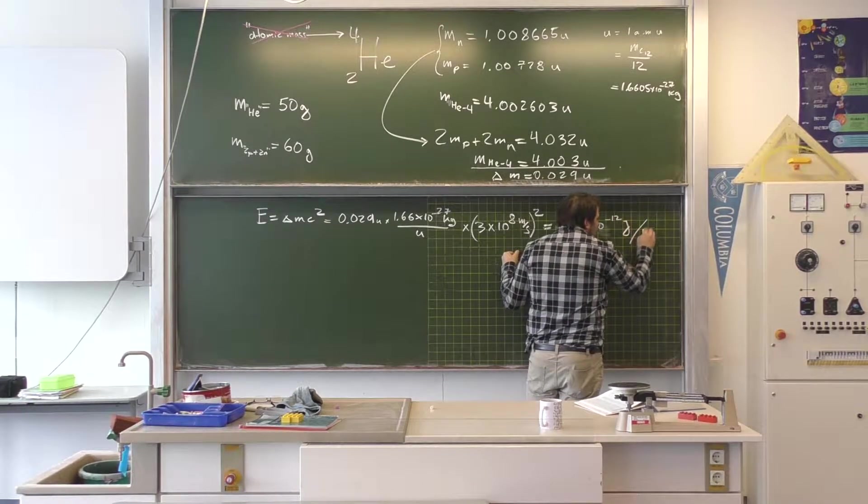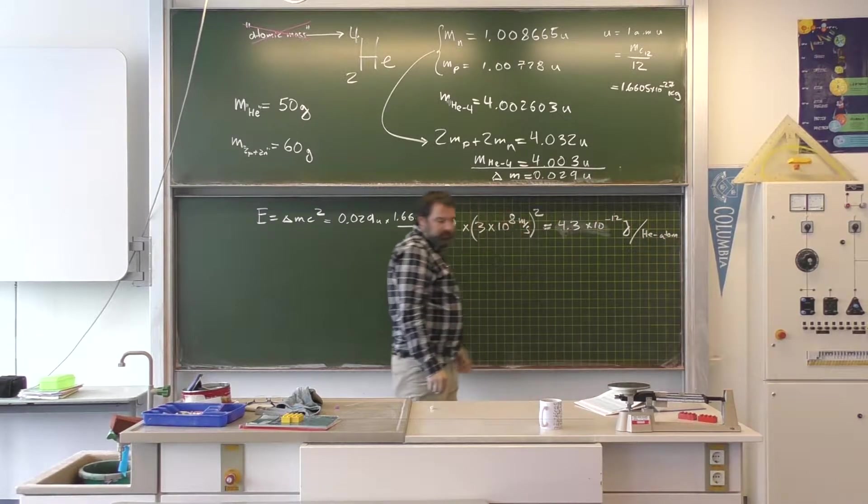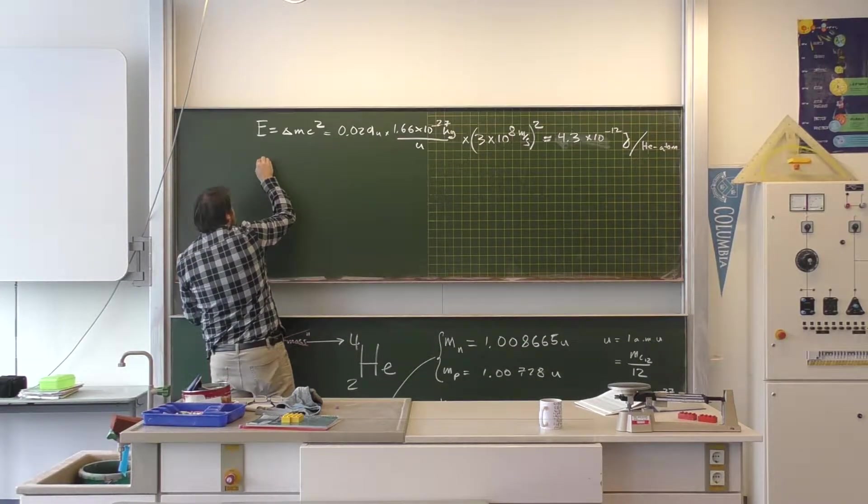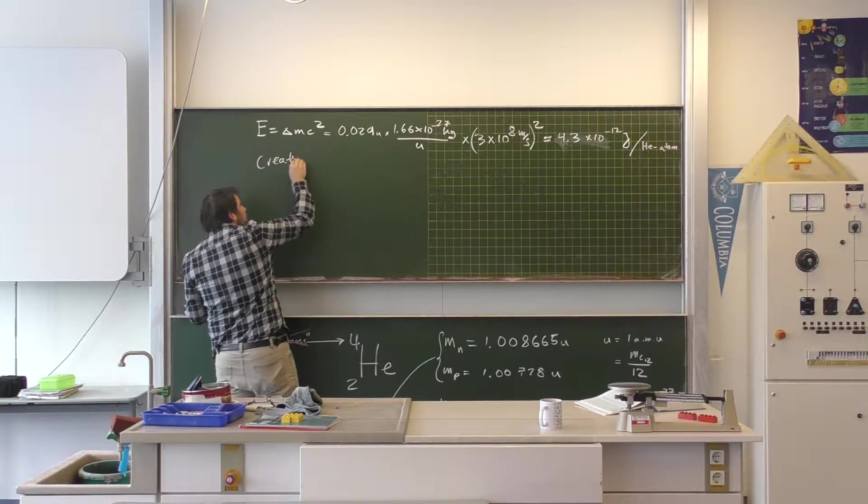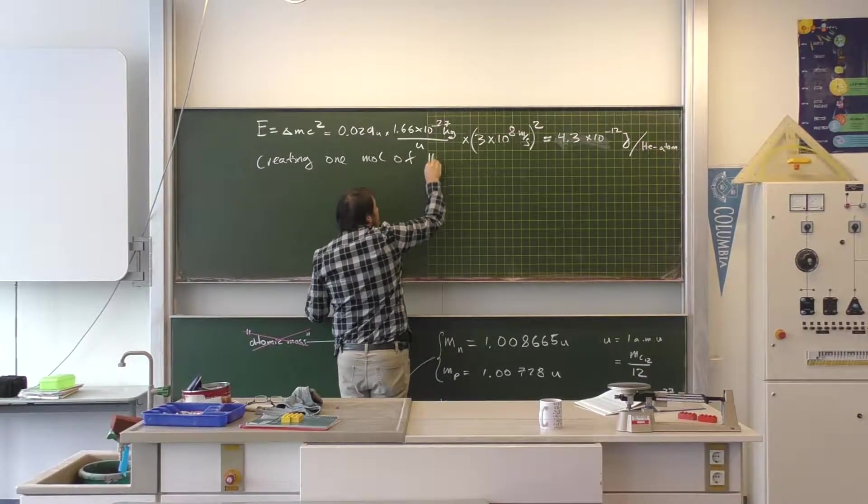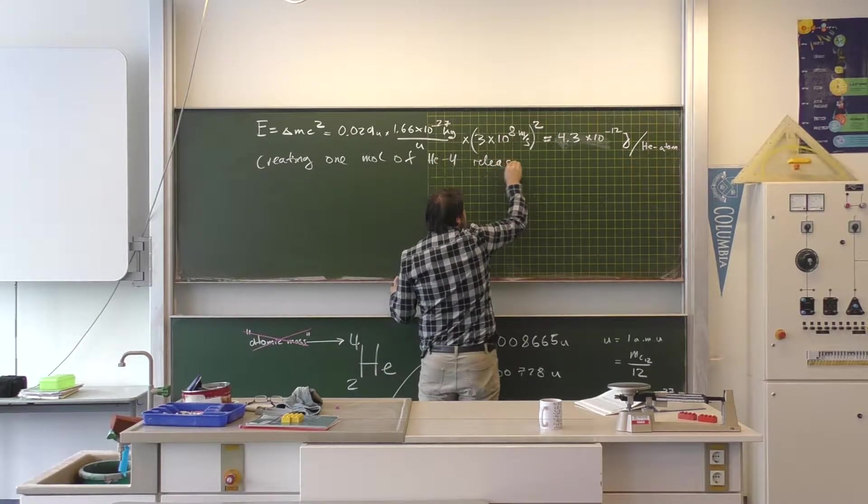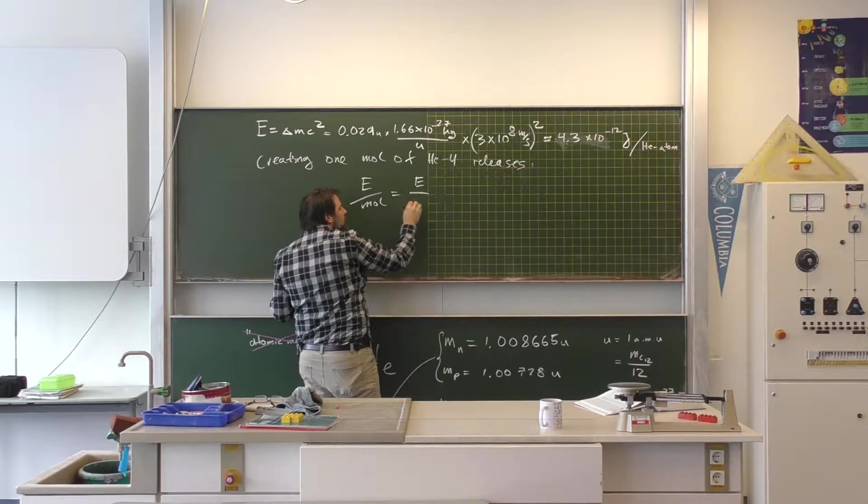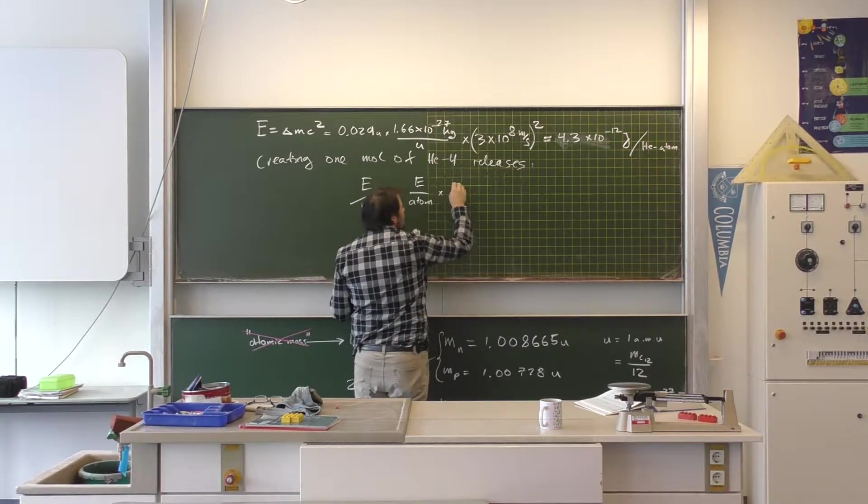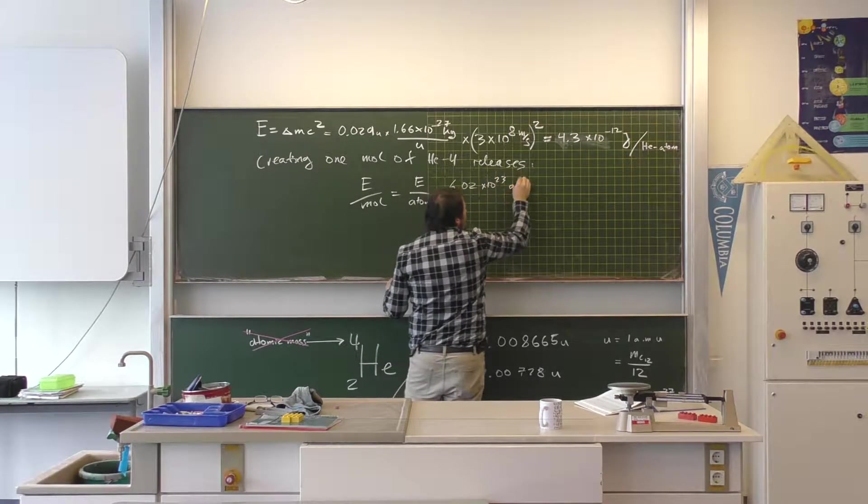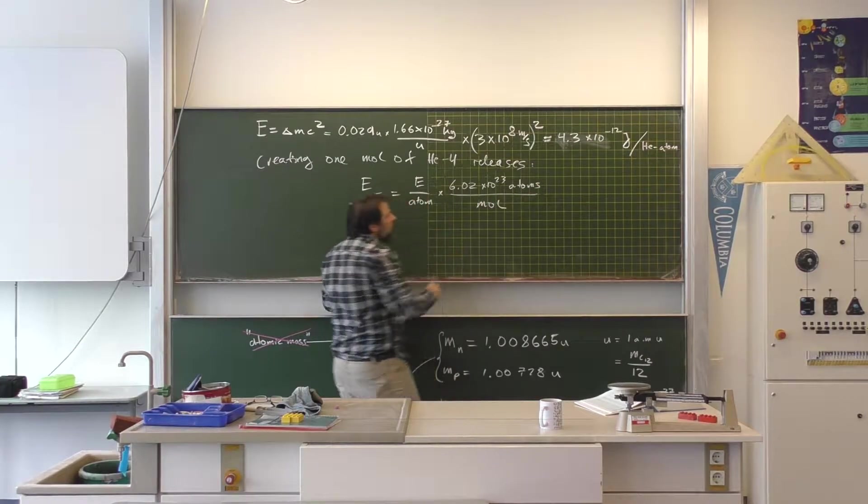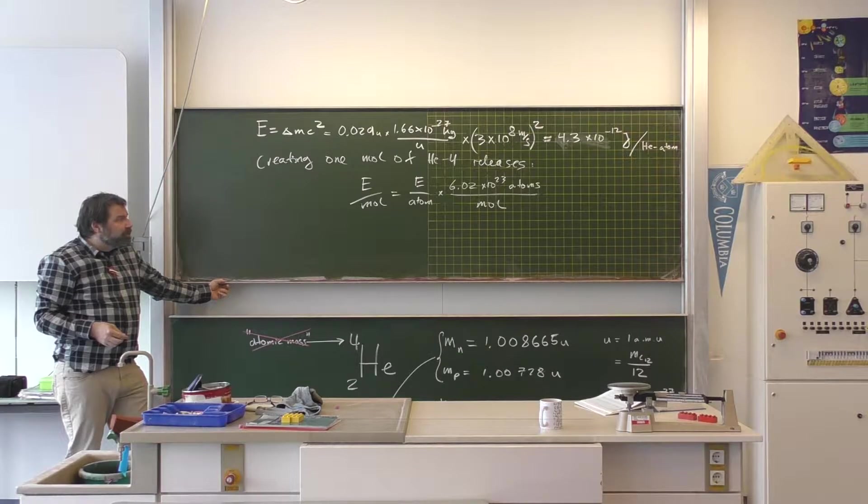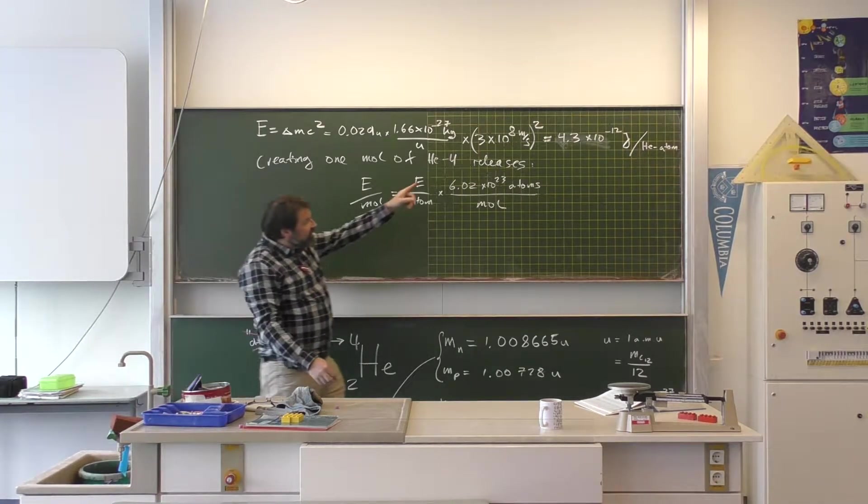This is one mole, one atom of helium being created. Let's figure out how much is released in one mole of helium being produced. This is per helium atom. So we can expand that idea. And say, we'll create one mole of helium. And then we'll create one mole of helium. It releases. Does that make sense? That's Avogadro's number, that's how it's defined. Avogadro's number is 6.022 times 10 to the 23 atoms per mole, therefore we'll get the energy per mole.